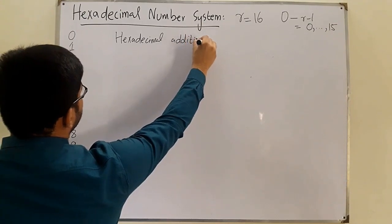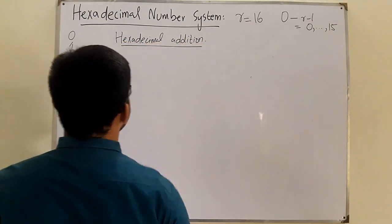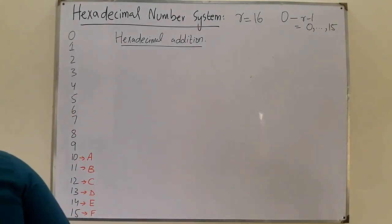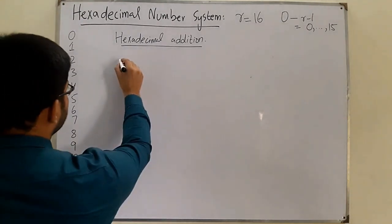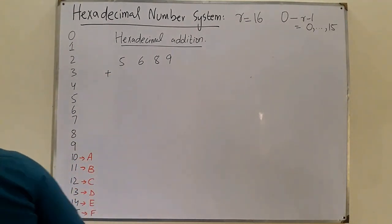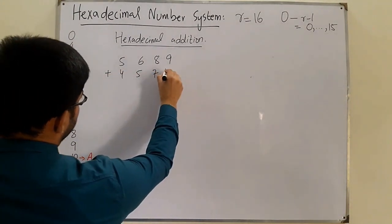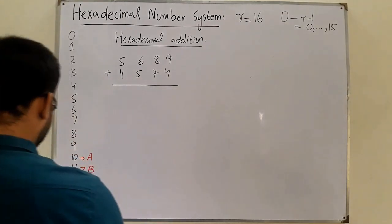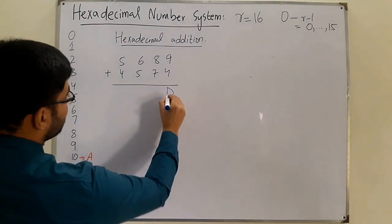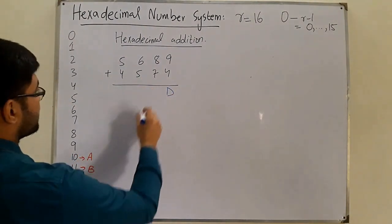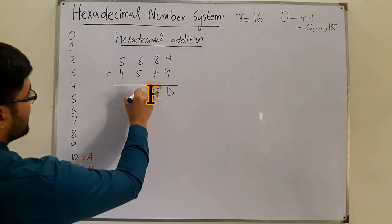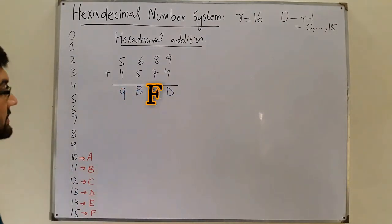The first operation is hexadecimal addition. The simpler addition rules apply here. For example, 5689 plus 4574: 9 plus 4 is 13, represented as D. 8 plus 7 is 15, which is E. 6 plus 5 is 11, which is B. And 5 plus 4 is 9. So the answer is 9BED — this is without a carry.